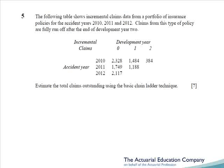Question 5 tests run-off triangles from chapter 11 of the notes. Yet again, we're asked to calculate the outstanding claims using the basic chain ladder. Surprisingly, the basic chain ladder has been asked four times in the last six papers, and this would have been an absolute gift of seven marks to any students who'd bothered to read the notes. The only twist is that we're given incremental claims rather than cumulative claims, so your very first step would be to accumulate those figures before calculating your development factors.